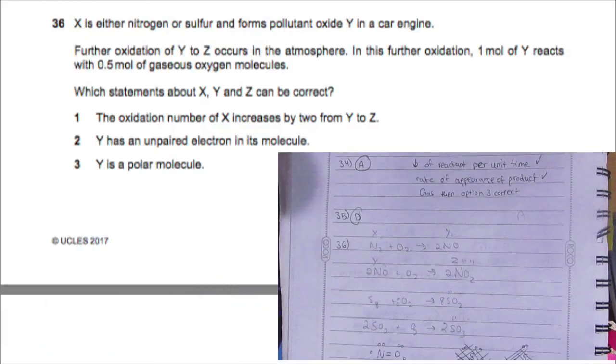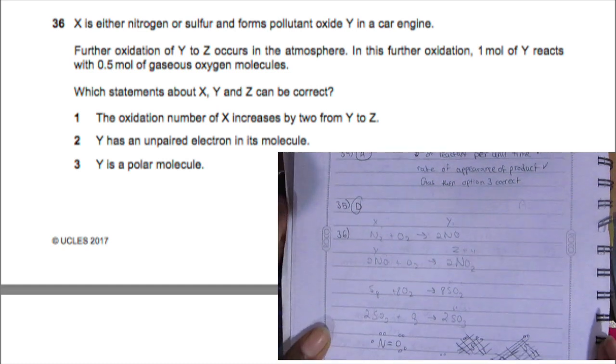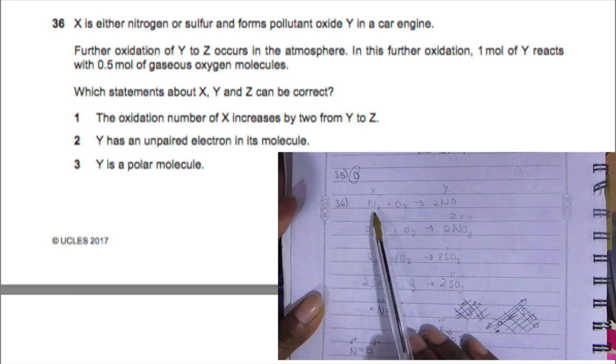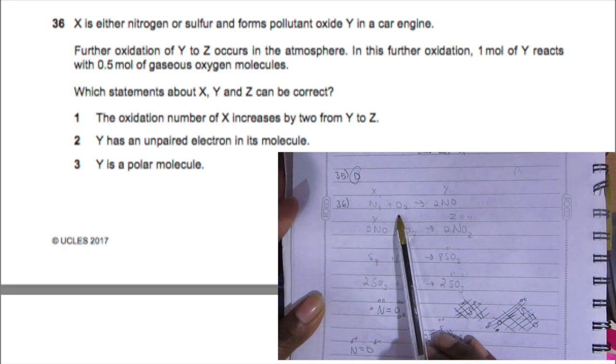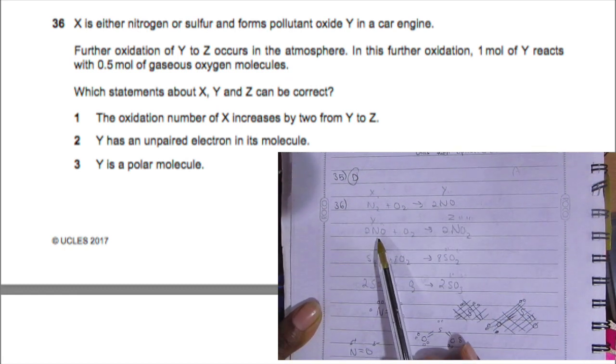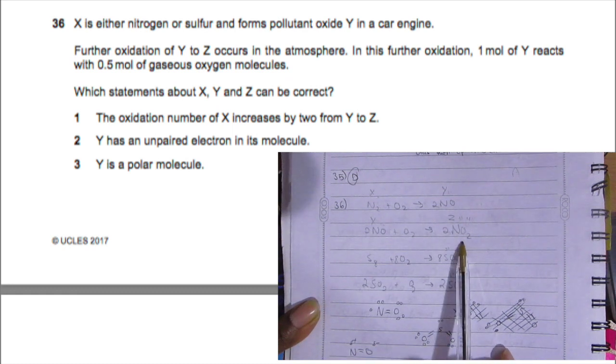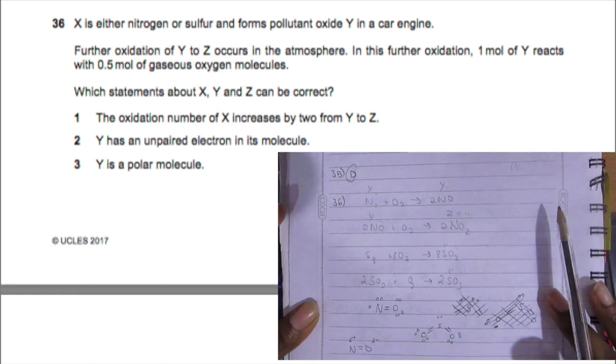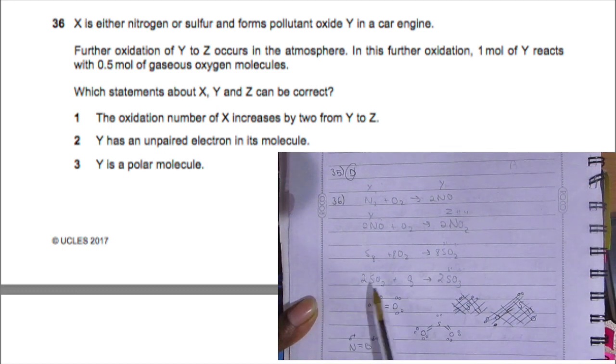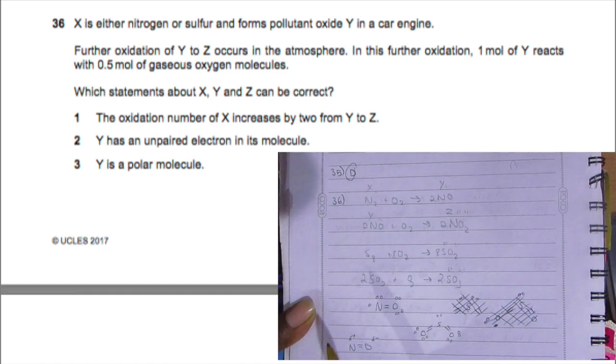Question 36: X is either nitrogen or sulfur and forms pollutant oxide Y in a car engine. Further oxidation of Y to Z occurs in the atmosphere. In this further oxidation, one mole of Y reacts with 0.5 moles of gaseous oxygen molecules. Let's write them out: nitrogen plus oxygen gives nitrogen monoxide, then nitrogen monoxide plus oxygen gives nitrogen dioxide. For sulfur: sulfur dioxide, then sulfur trioxide.